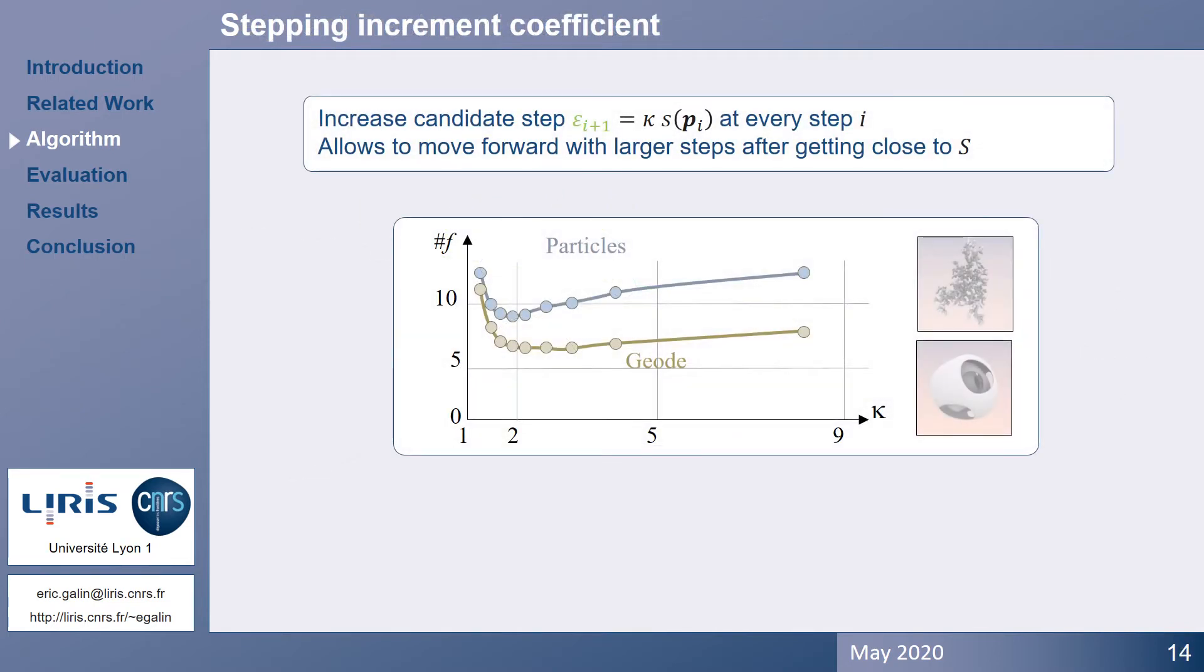The factor kappa defines the next candidate marching step according to the previous stepping distance. Small values tend to preserve the locality of the computation of the Lipschitz bound during the algorithm, whereas larger values increase the candidate marching step when marching away from the surface, thus resulting in fewer steps. In other words, small values make the algorithm stall when the ray comes close to the surface, and large values generate long candidate segments, which in turn produce larger Lipschitz bounds, which decrease effective stepping distance. In practice, setting kappa to 2 proves to be a good choice in most cases.